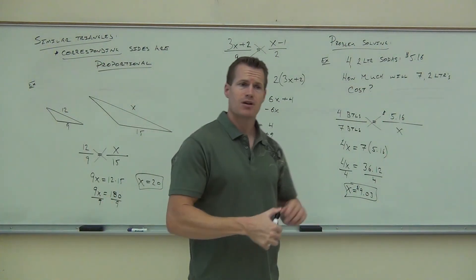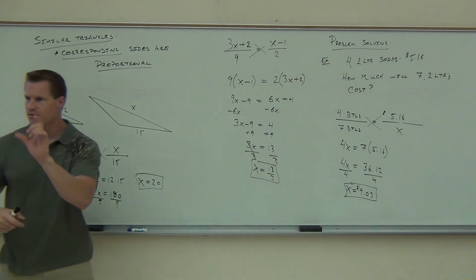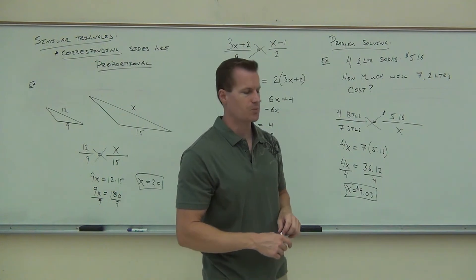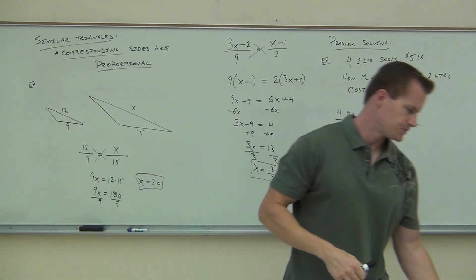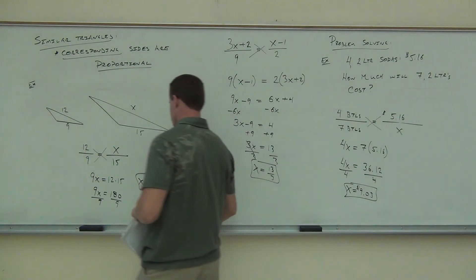Now, again, you did have an option here. You didn't necessarily have to do 12 equals X. You could have done, I want corresponding sides this way. 12 over X, 9 over 15. It wouldn't make a difference, because when you cross multiply it's commutative, it doesn't matter which order you do that. So you have options on proportions on which to do. How many of you understood the similar triangles idea? Good, okay.